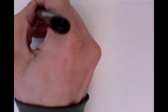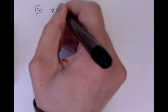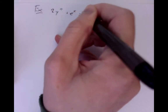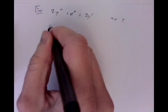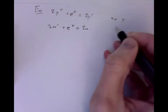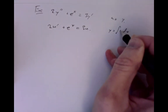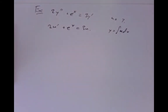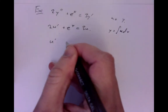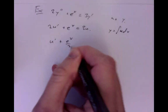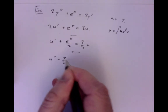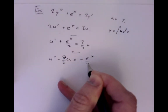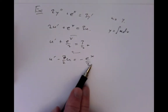So we'll take a simple example: 2y double prime plus e to the x equals 3y prime. Again, there's no y in here, so we can treat this as 2u prime plus e to the x equals 3u, and then y is the integral of u dx. If we rewrite it as u prime minus three-halves u equals minus e to the x over 2 — dividing by 2 and rearranging — I think this factor of 2 might be wrong in the lecture notes.